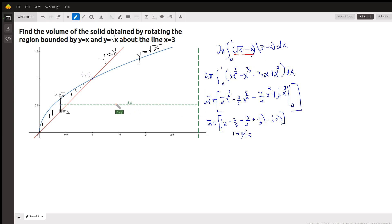If we were going from here, the total distance would be 3, but we have to subtract this x right here. So the distance from the axis of revolution to the center of the shell is represented by 3 minus x.